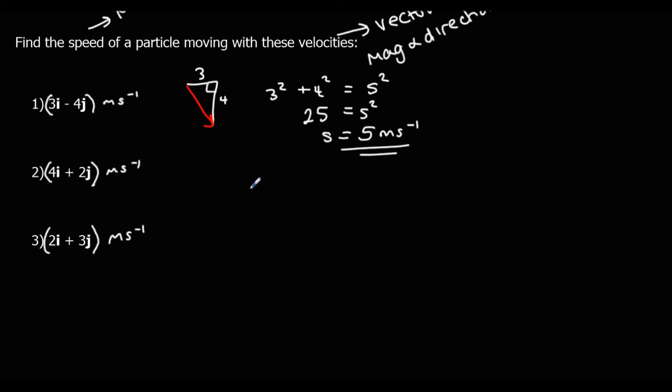Question 2. It's the same thing. So we go along 4, up 2 this time. And we want to know the length of the hypotenuse. So 4 squared plus 2 squared equals the speed squared. 16 plus 4. 20 equals speed squared. So speed is root 20 meters per second.